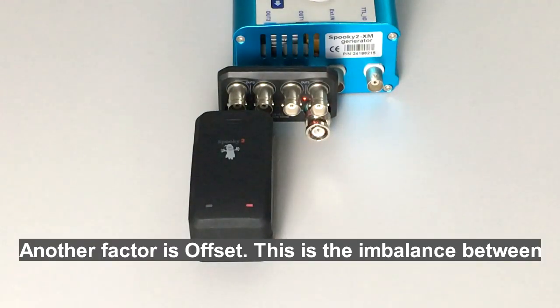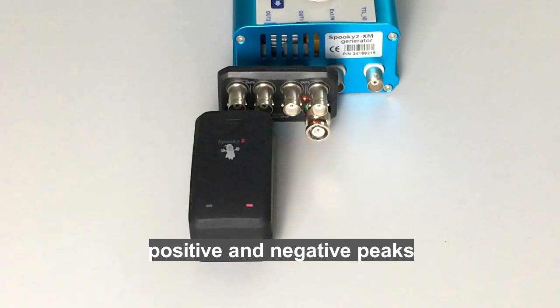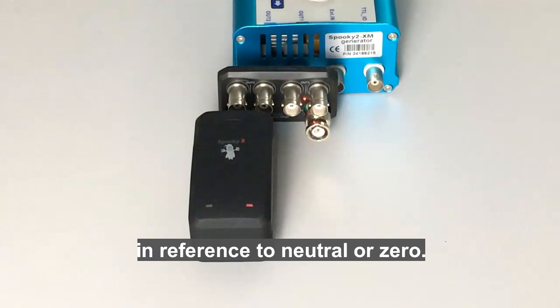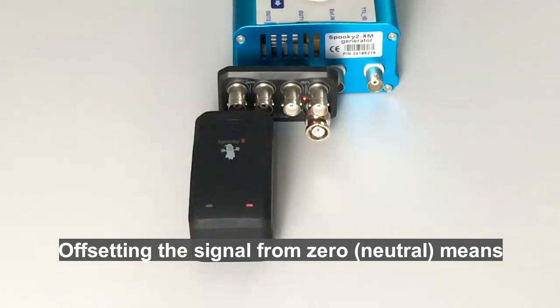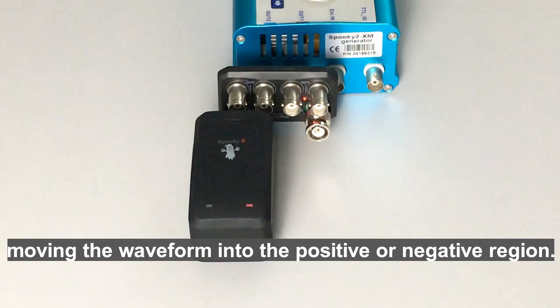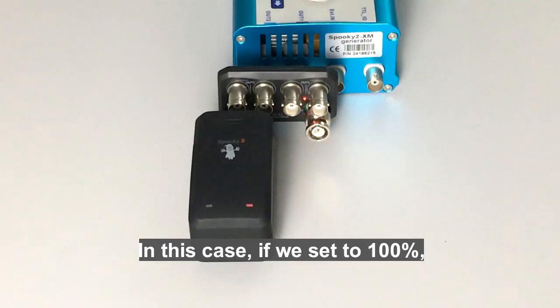Another factor is offset. This is the imbalance between positive and negative peaks in reference to neutral or zero. Offsetting the signal from zero neutral means moving the waveform into the positive or negative region. In this case, if we set to 100%, the signal will not go to the negative region.